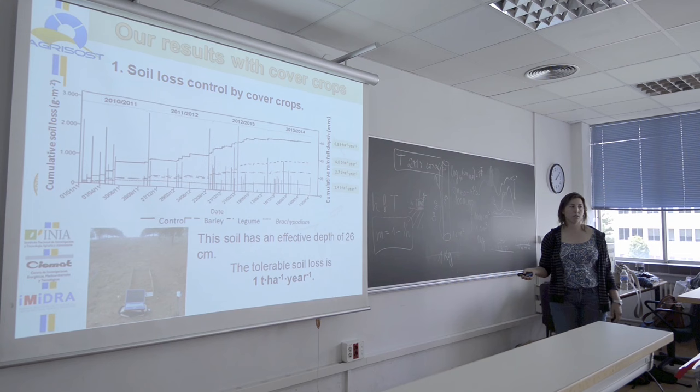The tolerable soil loss, based on the literature, is 1 ton per hectare per year. So we are losing much more soil than is acceptable.